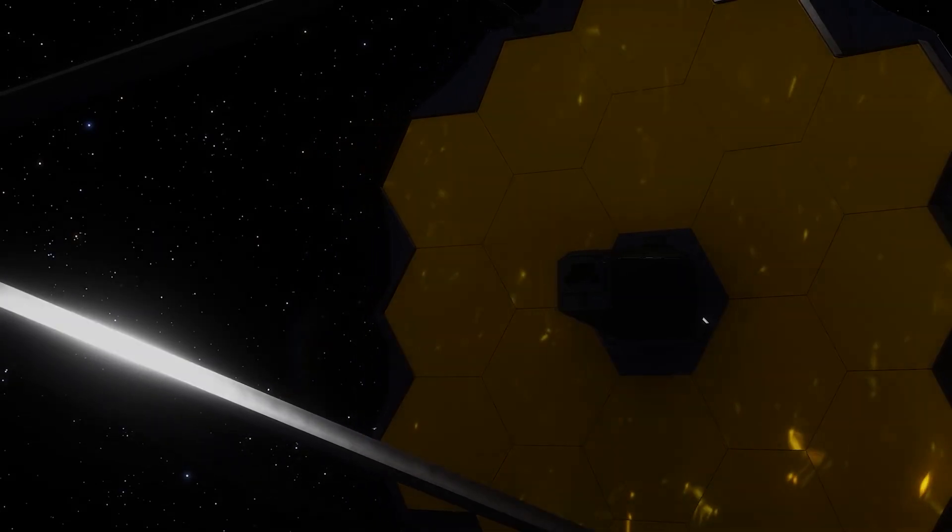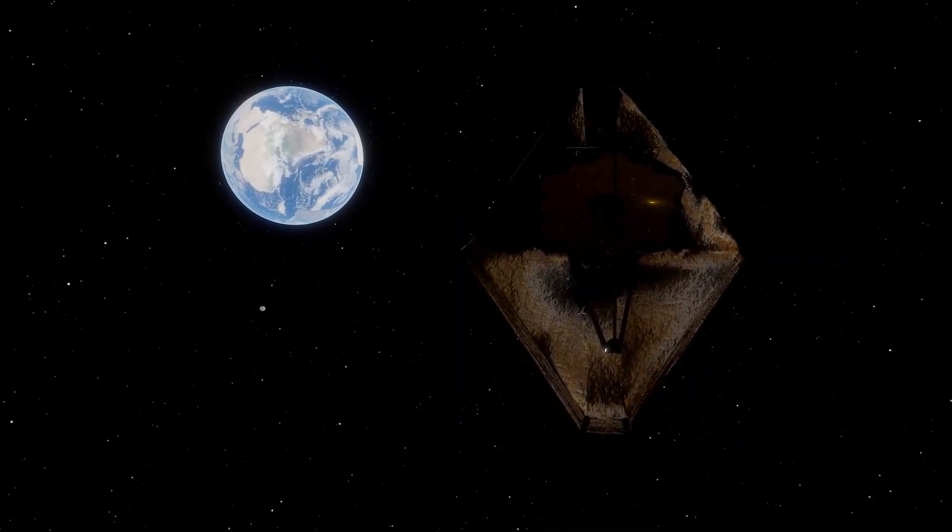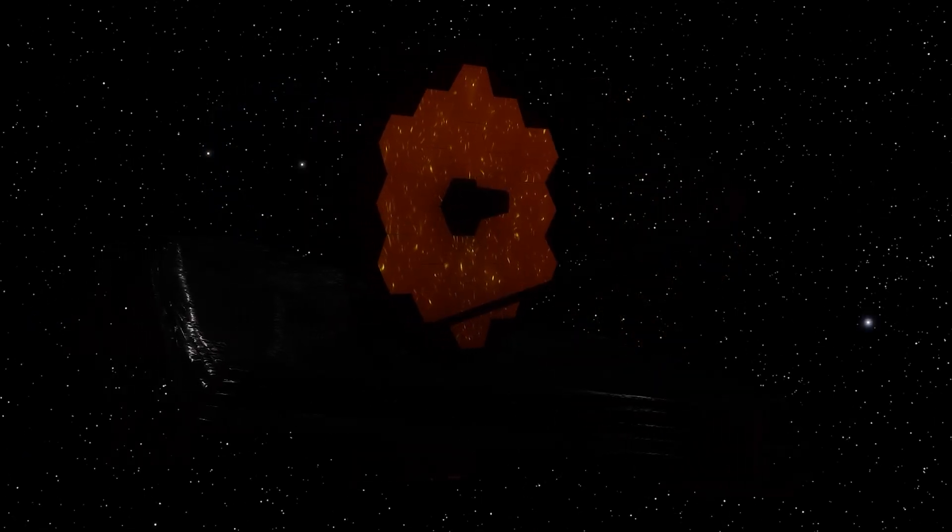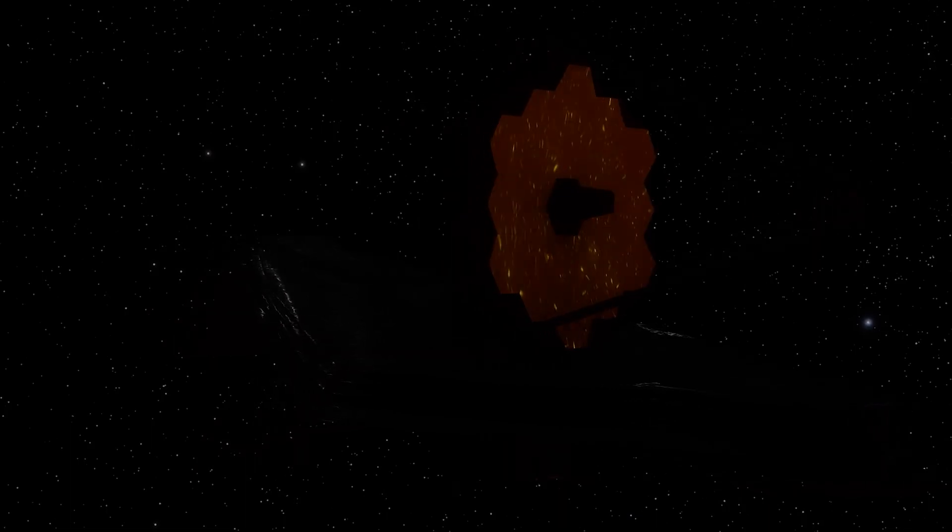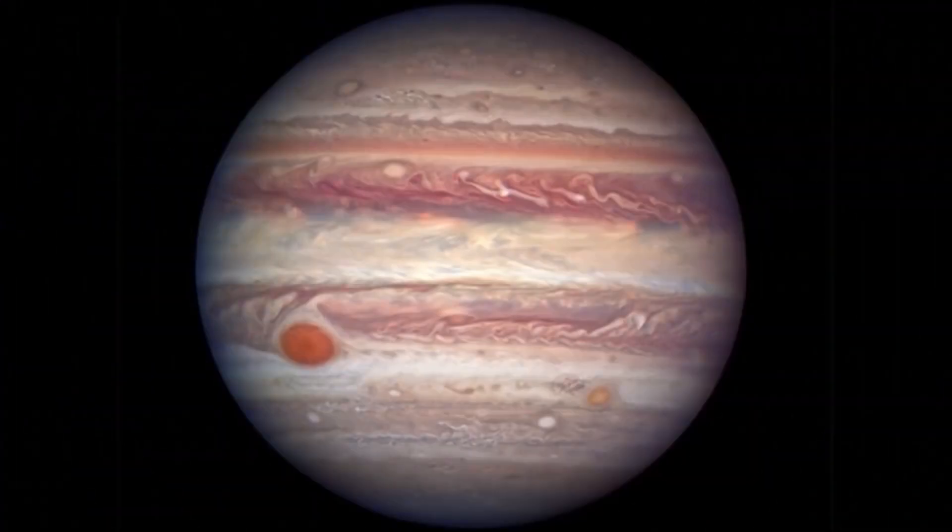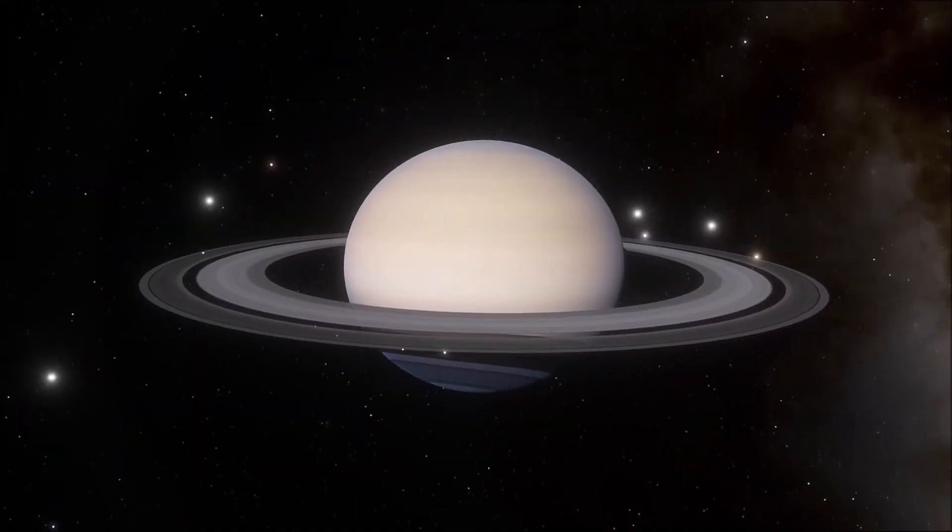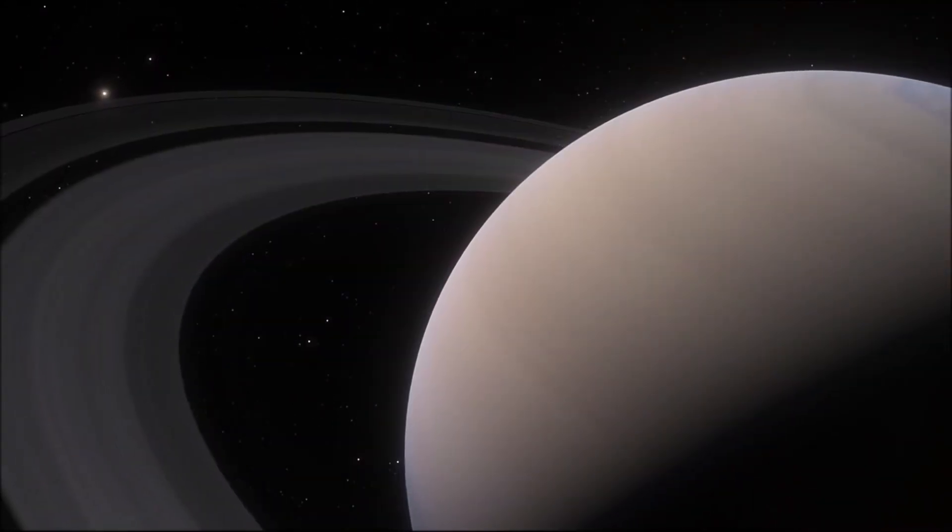The James Webb Space Telescope, the JWST, is the most advanced telescope ever built, being a hundred times more powerful than its predecessor. With its help, we will be able to unlock the secrets of this vast expanse of the universe. In the past, we have discovered a wide variety of planets, from small rocky worlds to gas giants larger than Jupiter, as well as extremely hot planets and habitable ones.